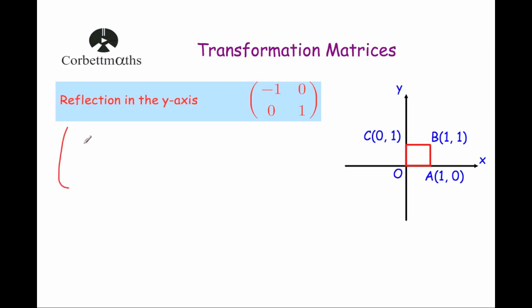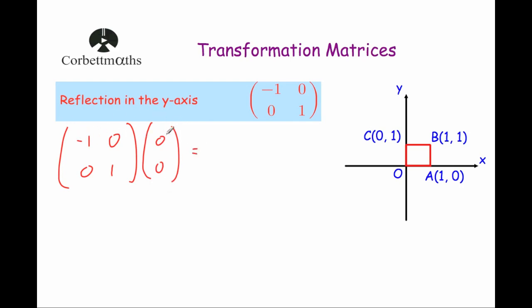So let's take the matrix minus 1, 0, 0, 1, and let's multiply it first of all by the point at the origin, so 0, 0. And when we do that, we're multiplying the first row by the column, we get minus 1 times 0 is 0, 0 times 0 is 0, so that's 0.